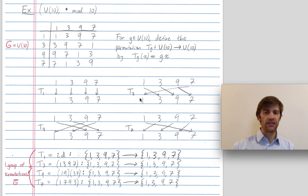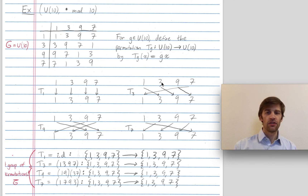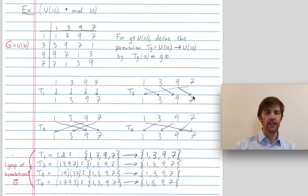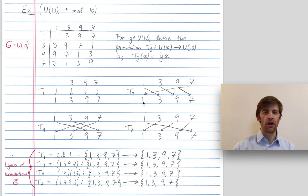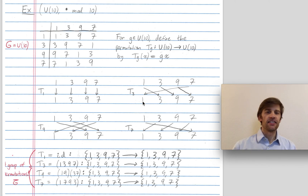The permutation T3 acts by multiplying by 3. 1 maps to 3. 3 maps to 3 times 3, which is 9. 9 maps to 9 times 3, which is 27, or 7 mod 10. 7 maps to 3 times 7, or 21, which is 1 mod 10. So here you can see T3 is a permutation — it's permuting these four elements of the group.